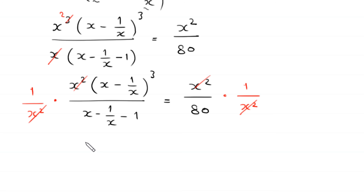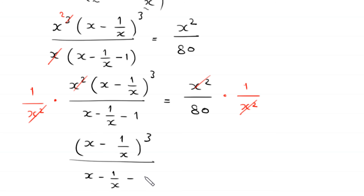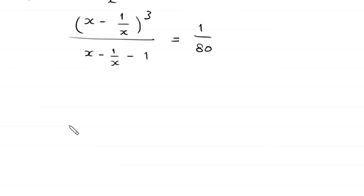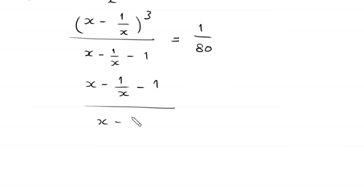This expression becomes (x - 1/x)³ divided by (x - 1/x - 1) equal to 1/80. Now if we take the reciprocal on both sides, this becomes (x - 1/x - 1) divided by (x - 1/x)³ equal to 80.